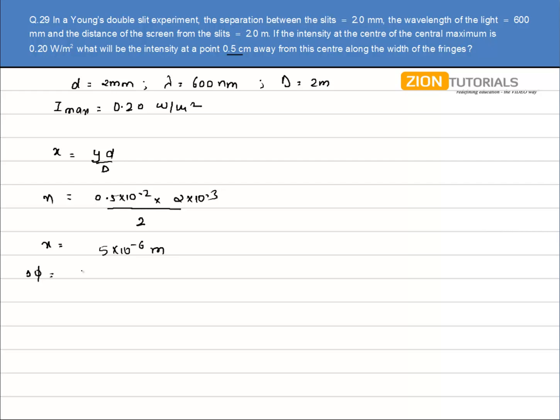Now the phase difference is given by 2π by λ into path difference. So substituting the values, I have value of λ as 600 nanometer into 5 into 10 to the power minus 6. So the phase difference comes out to be 16π plus 2π by 3.